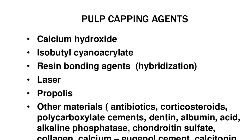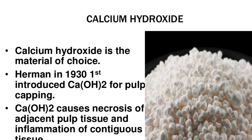Pulp capping agents include: calcium hydroxide, isobutyl cyanoacrylate, resin bonding agents, hybridization, laser, propolis, antibiotics, corticosteroids, polycarboxylate cements, dentin albumin, acid alkaline phosphatase, chondroitin sulfate, collagen, calcium eugenol cement, calcitonin, barium and strontium hydroxide, native enriched collagen solution, and hydroxyapatite.